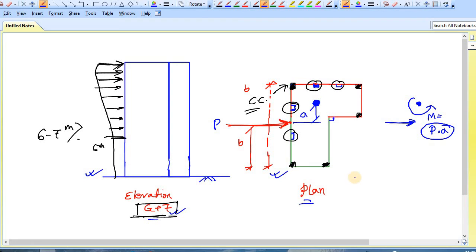So this couple is acting on this plan, and this couple is nothing but one type of torsion. If we look at this cross section - let's say this is the cross section - and if we apply a moment like this, this is nothing but a torsion, clear?